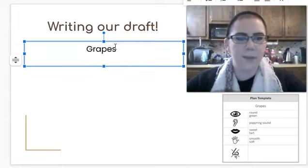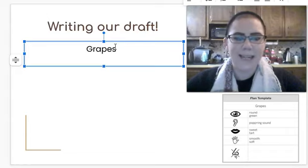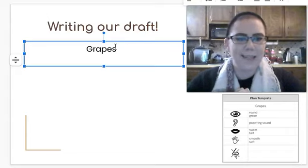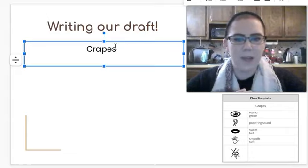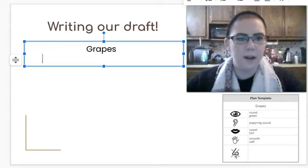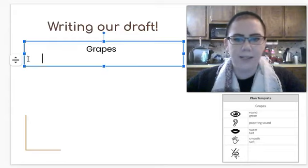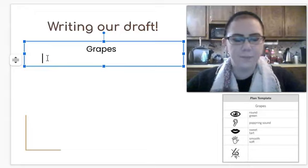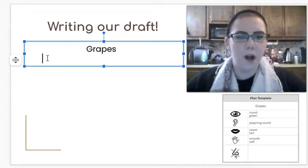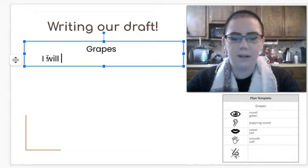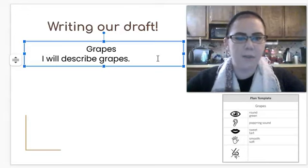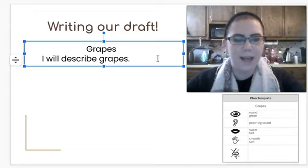When I start to write a paragraph, the first sentence is always indented. Say the word indented. That just means that there's a little space before I start. So I'm going to put a little space there before I actually start writing. See how it's not all the way over? There's a little bit of space. You'll do the same thing for your writing. So I want to start by saying what I'm talking about. I will describe grapes. I don't need to capitalize grapes because it's not a name. But I do need to capitalize the I because it's the beginning of my sentence.